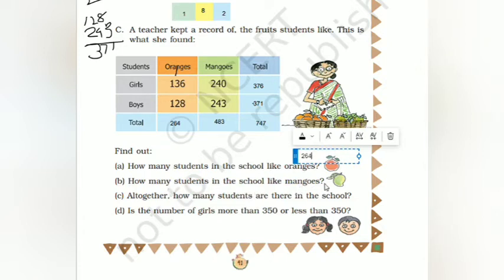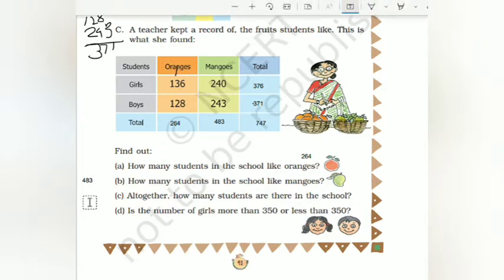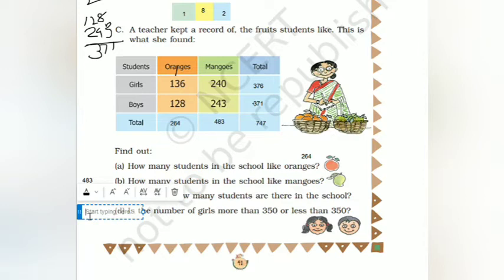How many students in the school like mangoes? 483. Altogether how many students are there in the school? Total students: 747 is the total strength. Is the number of girls more than 350 or less than 350? The total girls liking oranges and mangoes is 370, so it is more than 350.